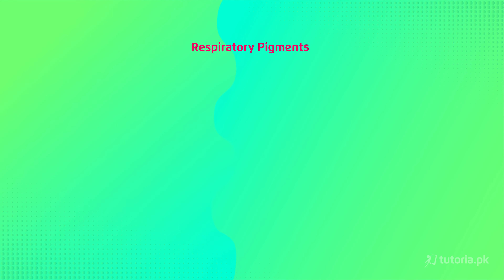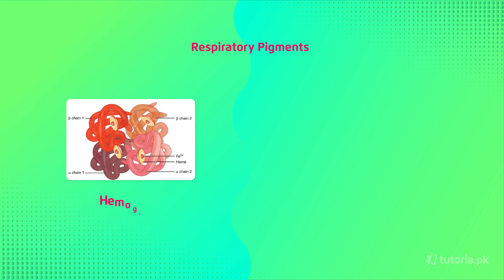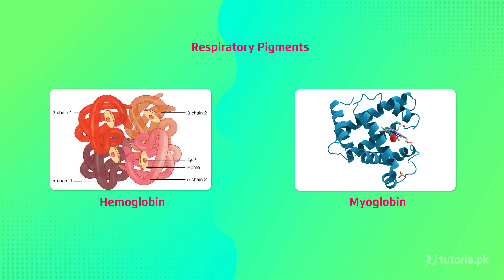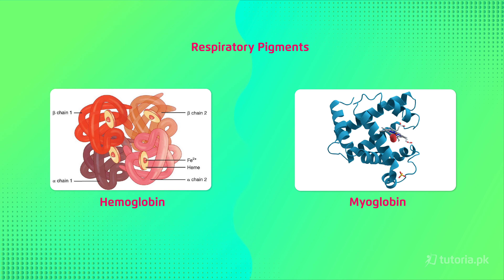We have two respiratory pigments: hemoglobin and myoglobin. Hemoglobin is present in our red blood cells and can carry four oxygen molecules. Myoglobin is present in our muscles — it is the reason why meat looks red — and it can carry only one oxygen molecule.